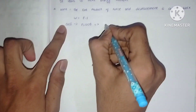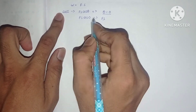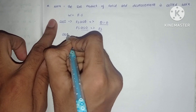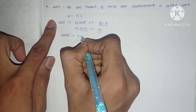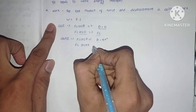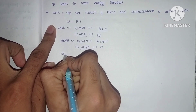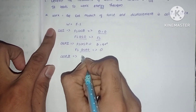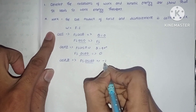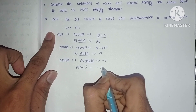Case one: F·S·cosθ where θ = 0°. F·S·cos0 = F·S, since cos0 = 1. Case two: F·S·cosθ where θ = 90°. F·S·cos90 = 0, since cos90 = 0. Case three: F·S·cos180°. The value of cos180 is minus one, so F·S × (−1) = −F·S.